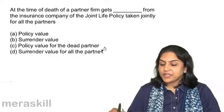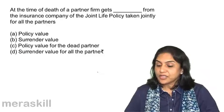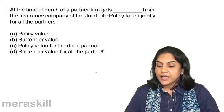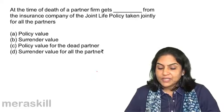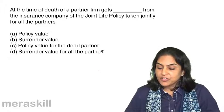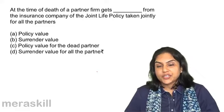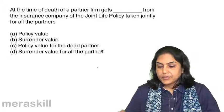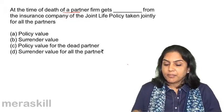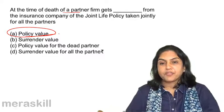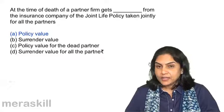At the time of death of a partner, the firm gets from the insurance company on the joint life policy taken jointly for all the partners: A, the policy value; B, surrender value; or C, policy value for the dead partner and surrender value for all the remaining partners. At the time of the death of a partner, the firm receives the policy value. Correct answer is C.